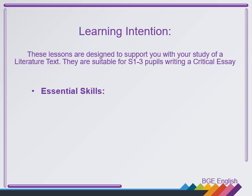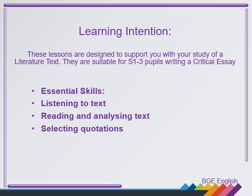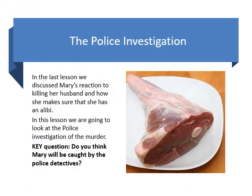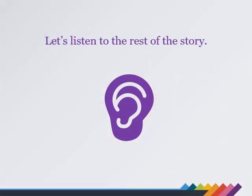The essential skills covered in this series of lessons are: listening to text, reading and analysing text, selecting quotations, and planning, structuring and writing a critical essay. In this lesson, we're going to be looking at the section of the text that involves the police investigation. In the last lesson, we discussed Mary's reaction to killing her husband and how she makes sure that she has an alibi. Do you think Mary will be caught by the police detectives? Let's listen to the rest of the story and find out.